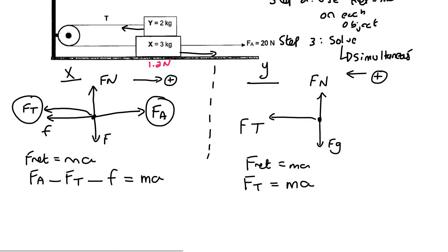I'm going to fill in as much as I can. The applied force is 20, the tension force we don't know, the frictional force acting on that object was 1.2, it has a mass of 3, and the acceleration we don't know. Then for the other object we're just going to say FT equals 2a. Let's first just combine these two numbers together, so that's going to be 18.8.